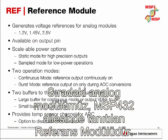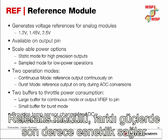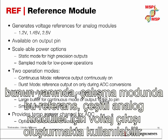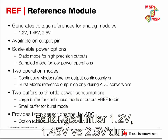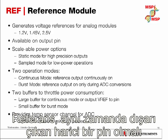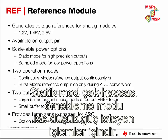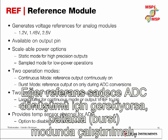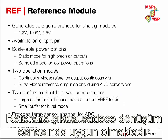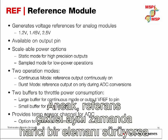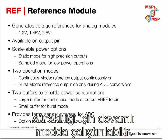The next analog module is the reference module. It is extremely flexible, with different power and operating modes, and is used to generate voltage outputs for various analog modules. The available output voltages are 1.2V, 1.45V, and 2.5V. The reference can also be brought out to an external pin to drive external circuitry. The reference can be programmed in two power modes: static mode for high precision, and sample mode for low power. If only needed during ADC conversion, it can be placed in burst mode; if it must also drive an external component, it can be set to continuous mode.